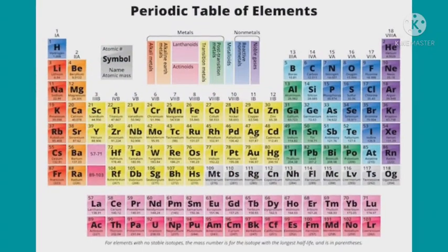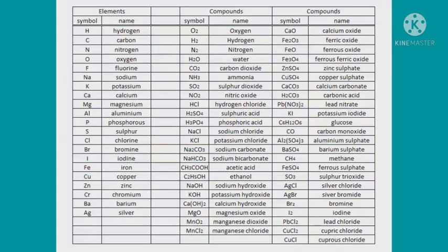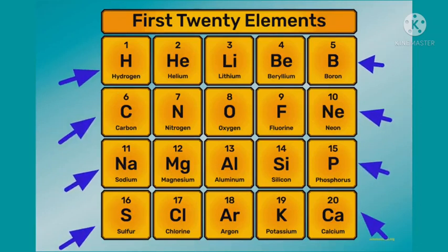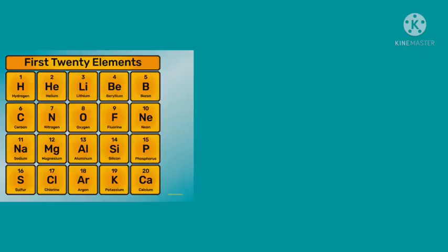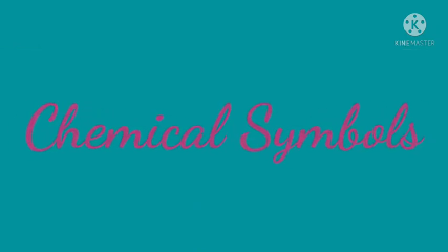Students, you know that there are 118 elements and millions of compounds. Writing the full name of elements and compounds is very inconvenient and time consuming. In order to simplify this task, specific abbreviations were used to represent the elements and compounds, and these abbreviations are known as chemical symbols.